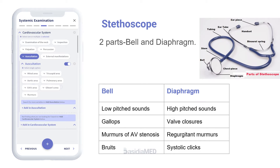Stethoscopes have two areas: the bell and the diaphragm. The bell should be applied lightly to the skin and is used in identifying low-pitched sounds such as gallops, murmurs of AV stenosis, and bruits. The diaphragm should be pressed tightly against the skin and helps identify high-pitched sounds such as valve closures, regurgitant murmurs, and systolic clicks.